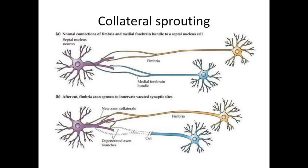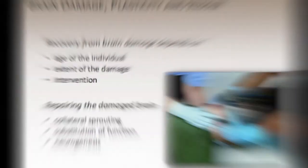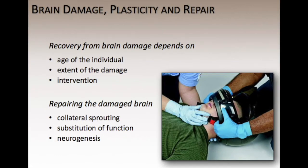Collateral sprouting is one way in which the brain repairs itself. In this process, the axons on adjacent neurons grow more branches. Substitution of function is a second way the brain can repair itself. When this happens, another area in the brain takes over the function of the damaged area.